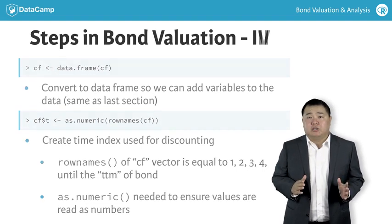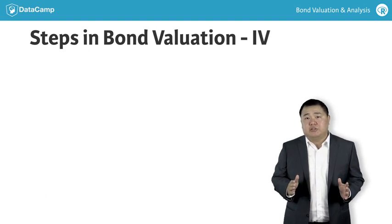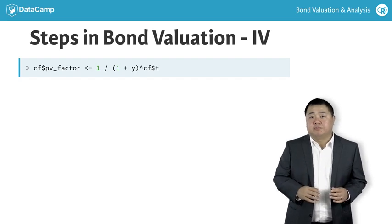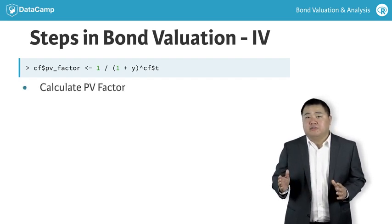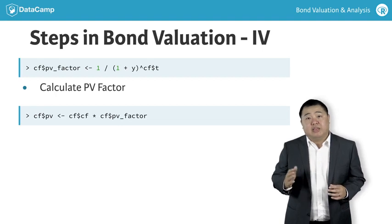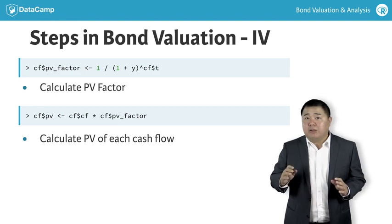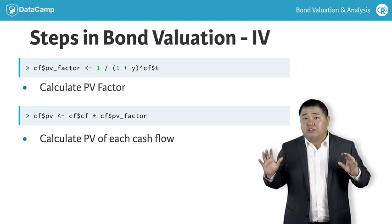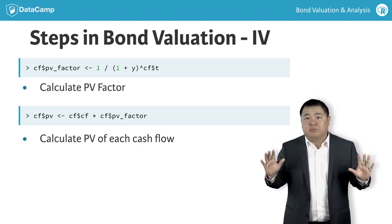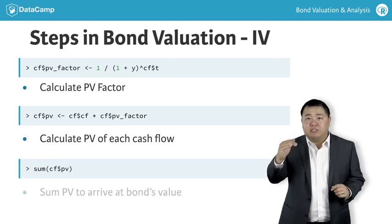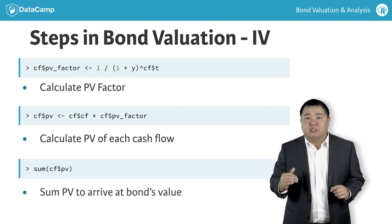The last three steps are similar to the discussion in the last section when we did the step-by-step valuation. First, we calculate a present value factor PV factor. Next, we calculate the present value of each cash flow PV by multiplying each cash flow by the appropriate PV factor. Finally, we sum the present value of each cash flow to arrive at the bond's value.